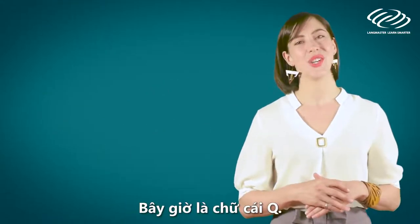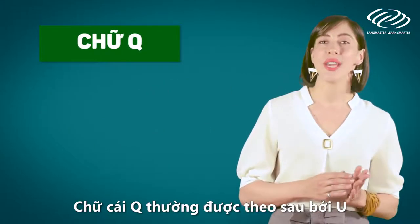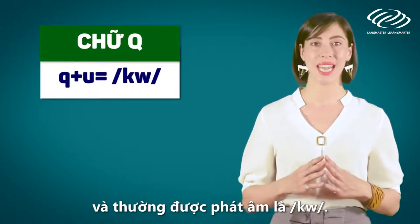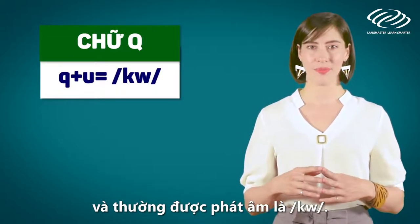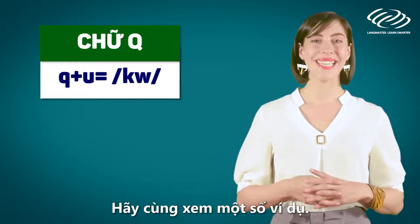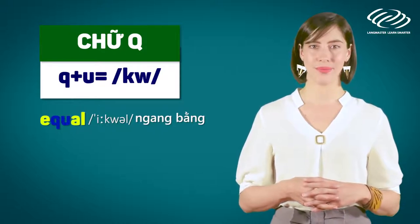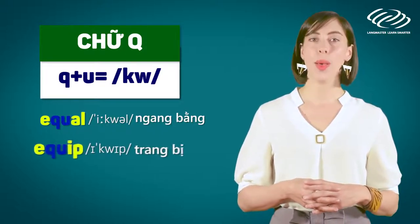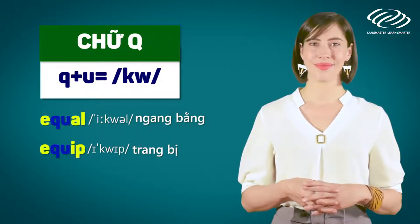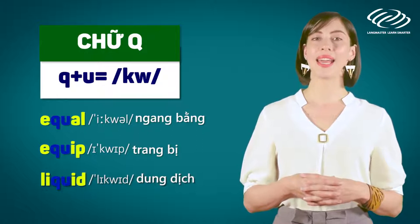Now for the letter Q. The letter Q is often followed by U and pronounced as /kw/. For example: equal, equip, liquid.